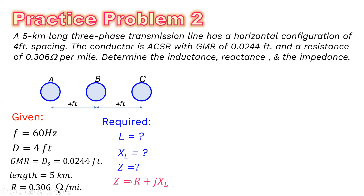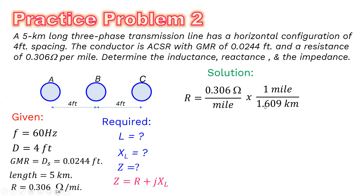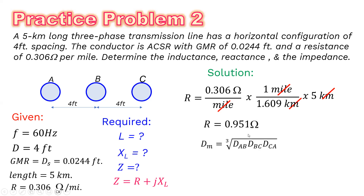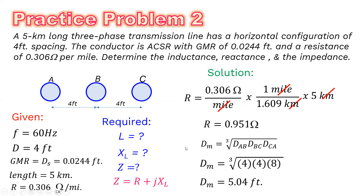The impedance equals R + jX_L. For resistance: 0.306 Ω/mile × (1 mile / 1.609 km) × 5 km = 0.951 ohms. For the geometric mean distance in horizontal configuration: D_M = cube root of (4 × 4 × 4 × 8) — wait, that is cube root of (4 × 4 × 8) = 5.04 feet.